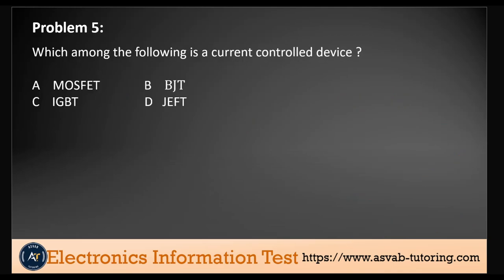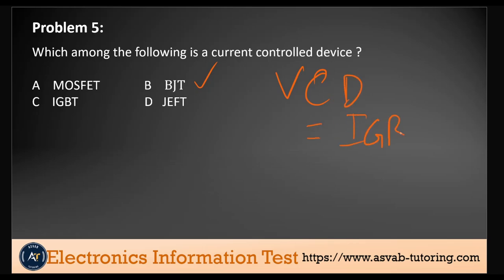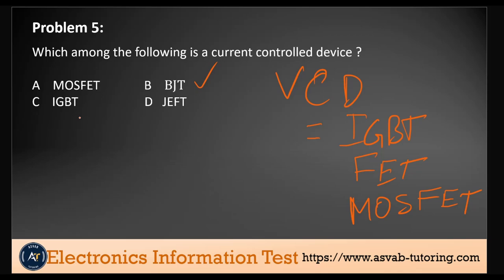Problem five. Which among the following is a current controlled device? The MOSFET, the BJT, the IGBT, or the JFET? The only current controlled device here is the BJT. The voltage controlled devices include the IGBT, the FET, and the MOSFET. We also have frequency control devices like the quartz oscillators, and phase control devices like the SCR and the TRIAC. But the current controlled device is only the BJT.